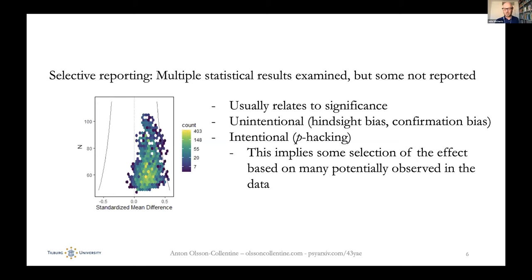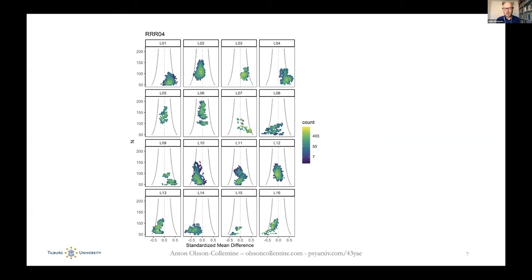Intentional would be some selection based on the data, which causes bias. This is one RRR and you see the 16 labs here. Running the same study in different labs, you can imagine some differences in the scatter plots — higher or lower in the funnel, affecting lower or bigger sample sizes. You could imagine some pick an effect on the right-hand side, others on the left, giving rise to all sorts of confusion in the literature.